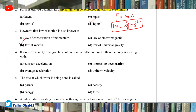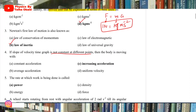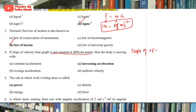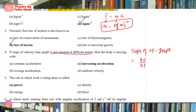Question number 4: If the slope of the velocity-time graph is not constant at different points, then the body is moving with — remember that the slope of the v-t graph written as Δv/Δt, because on the y-axis we put velocity and on the x-axis we put time. This is the acceleration formula.